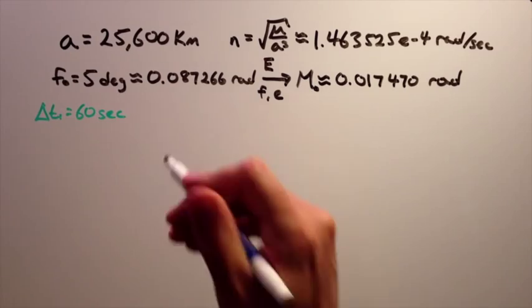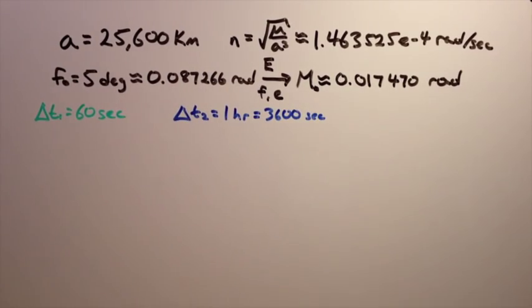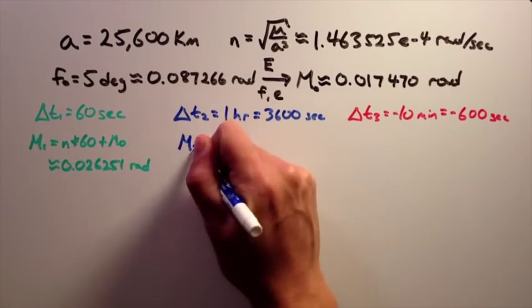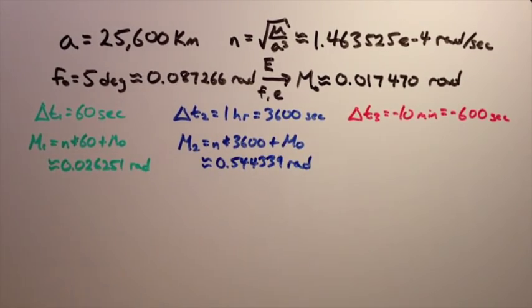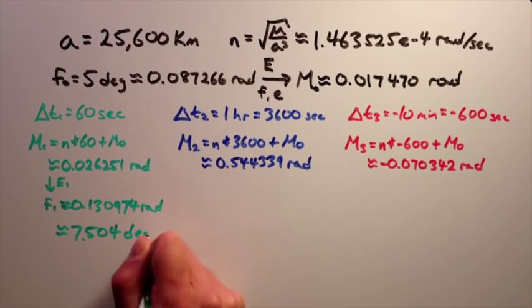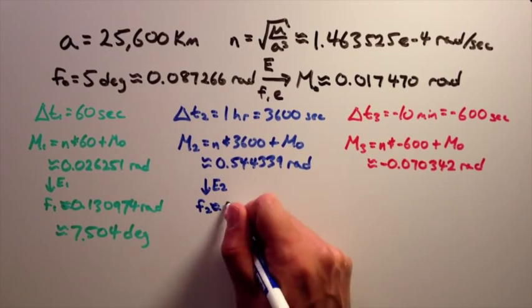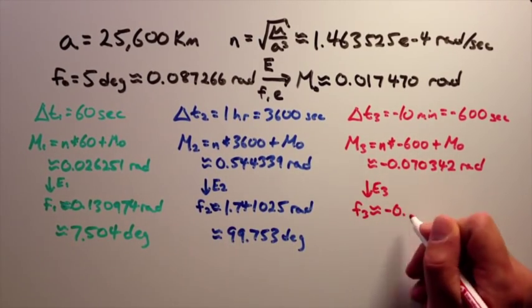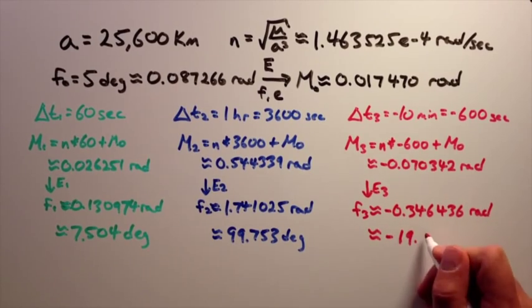Now that you have the current mean anomaly, you can calculate the mean anomaly at each of the desired times using the original mean anomaly, the mean motion, and the time in seconds. For each of the mean anomalies that you just calculated, you can then convert them back into true anomalies using the eccentric anomaly. These true anomalies will now give you the position of the satellite at the desired times.